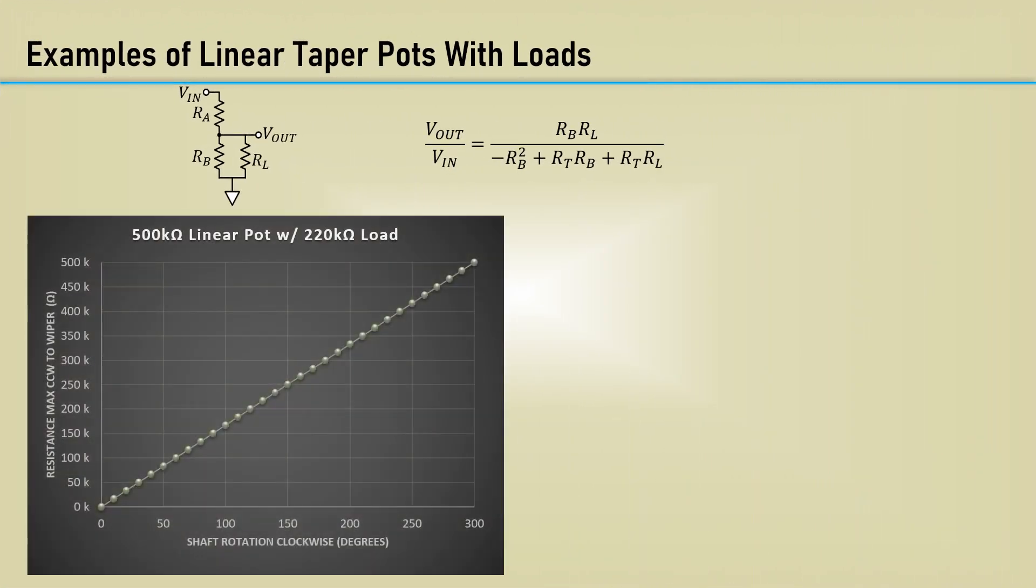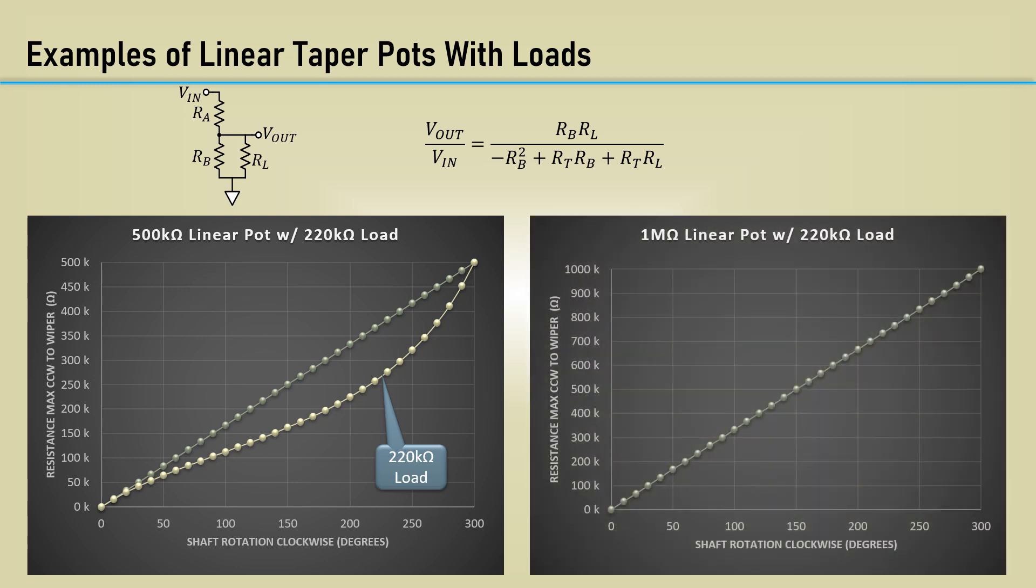A linear taper pot could be used instead. Here's a 500k linear function. Having a 220k load turns the linear pot into somewhat of an exponential taper. Here's a 1 meg with a 220k load. The response looks a lot like audio taper pot characteristics. So having a load on a linear pot can turn it into a subtle audio taper pot.